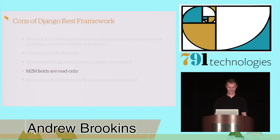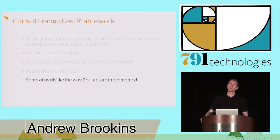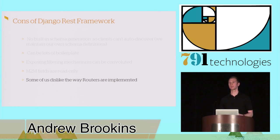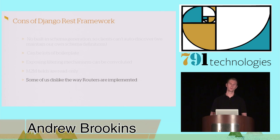Some of us have mixed feelings about how routers are implemented. A router is something you can use so that when you have API code for a resource — say, books — it automatically generates some URLs for it. I don't really have a problem with it, but we're a diverse group of folks, and I want to honor the voice of the engineer who didn't like how routers were implemented.